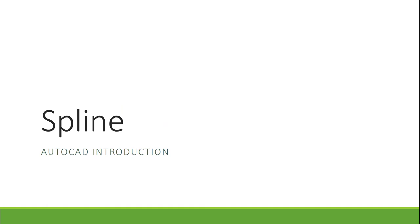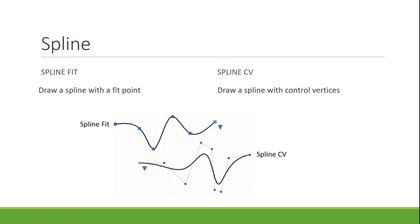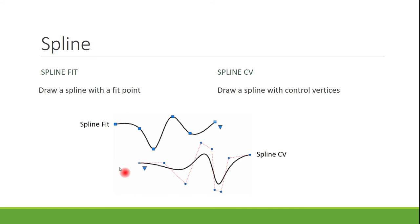A spline is similar to using French curves in board drafting — it creates smooth curves going in different directions. There are two types: spline fit, which places nodes (blue dots) everywhere you click to make the curve, giving you direct control; and controlled vertices (CV), which creates lines of tangency that rotate to shape the curve more indirectly. The spline fit is the one I use most often.